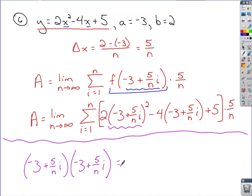Foiling that out, negative 3 times negative 3, positive 9. Outside, I've got negative 3 times 5 over n i, so that'd be negative 15 over n i. And then it'd be the same on the inside terms. And if you multiply your last terms, you've got 5 times 5, 25. You've got n times n, n squared. And you've got i times i, i squared.